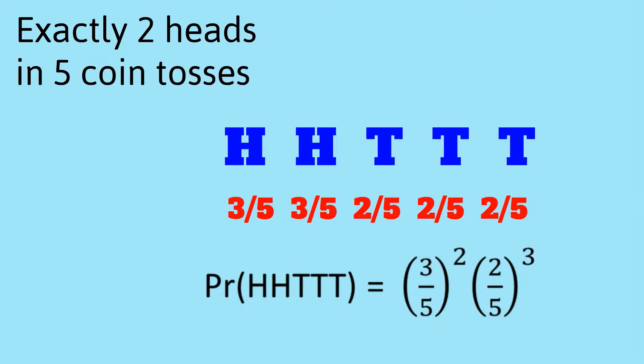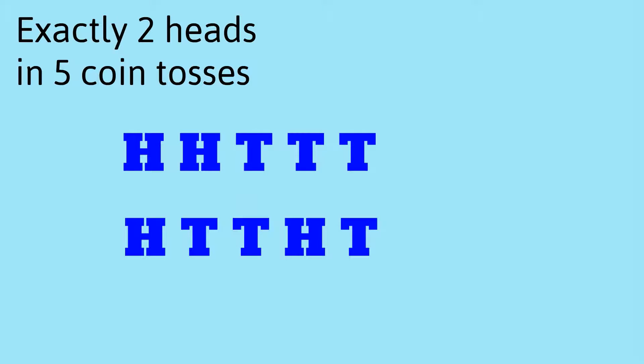Now if we go back to what we had before, we had this other possible way of getting two heads. And if you work it out, you'll see that you get exactly the same answer. Whenever you have two heads and three tails, you're always going to get that answer that I had up here, three-fifths squared and times two-fifths cubed.